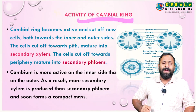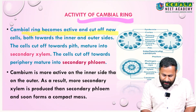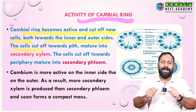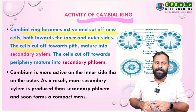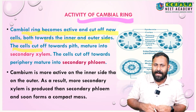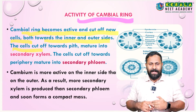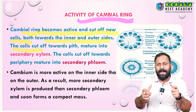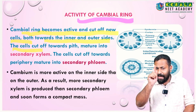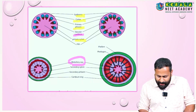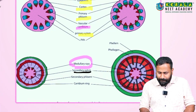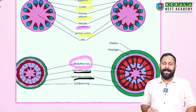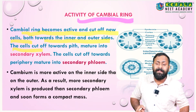The cambial ring becomes active and cuts off new cells both towards the inner side and the outside. Cells cut off towards the inner side — towards the pith or center — mature into secondary xylem. Cells cut off towards the outside or periphery mature into secondary phloem. So secondary xylem and secondary phloem are formed due to the activity of the cambial ring.